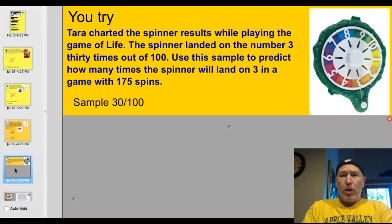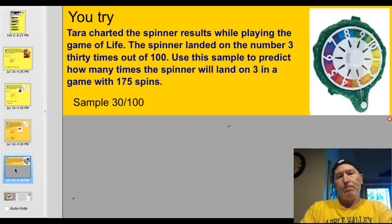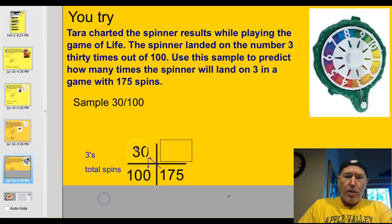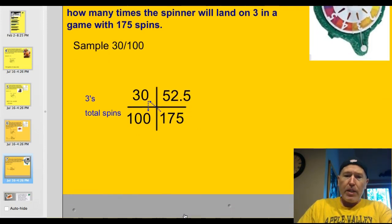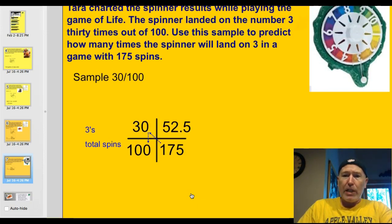Tara charted the spinner results playing the Game of Life. The spinner landed on the number 3, 30 times out of 100 spins. Use this sample to predict how many times the spinner will land on 3 in a game with 175 spins. Using ratio proportion: 175 times 30 divided by 100 gives 52.5 — basically 52 or 53 spins; I'd round up to 53.